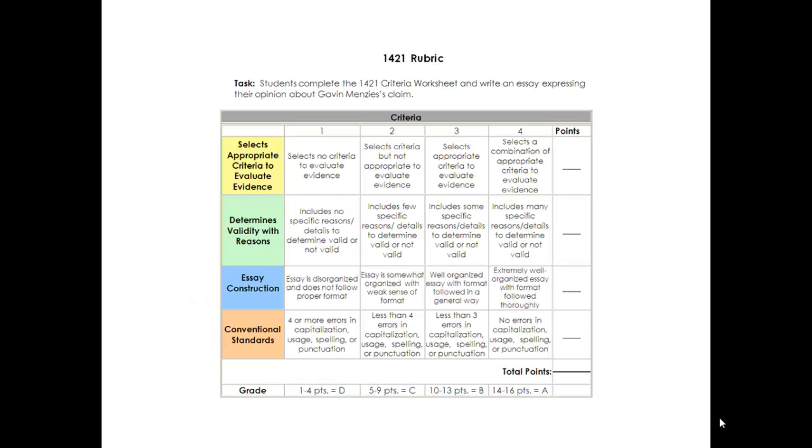You have four sets of criteria that you will be evaluated based on. The first is whether or not you select appropriate criteria to evaluate the evidence. For these criteria, look at the criteria handout, A through F. Are you using elements on that to help you determine whether or not it's good evidence? Next, whether you determine the validity with reasons. So you are able to explain your point. You can say, I think this is valid because, or I don't think this is valid because.